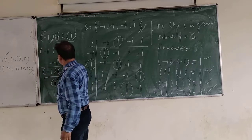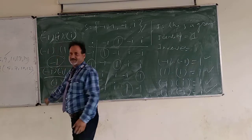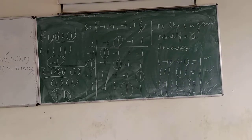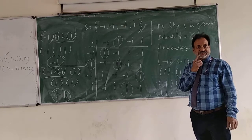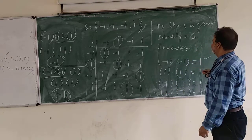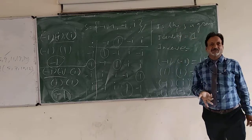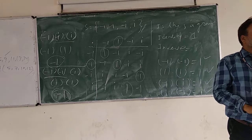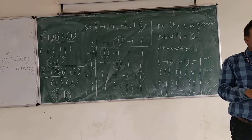Both ways we have got the same result. So it is associative also. Therefore it is confirmed: this is a group, because it has an identity element, inverses, and it is associative.